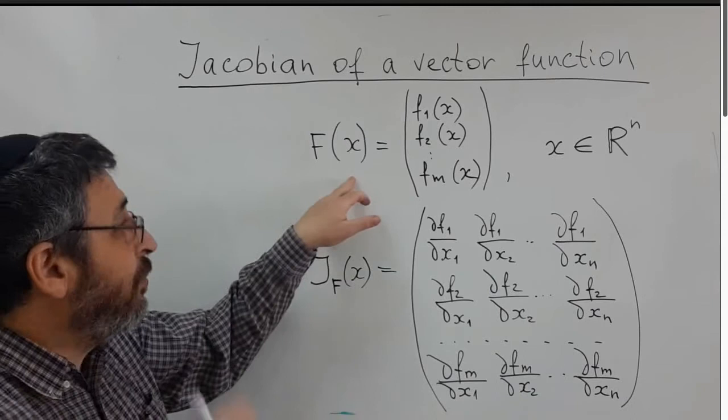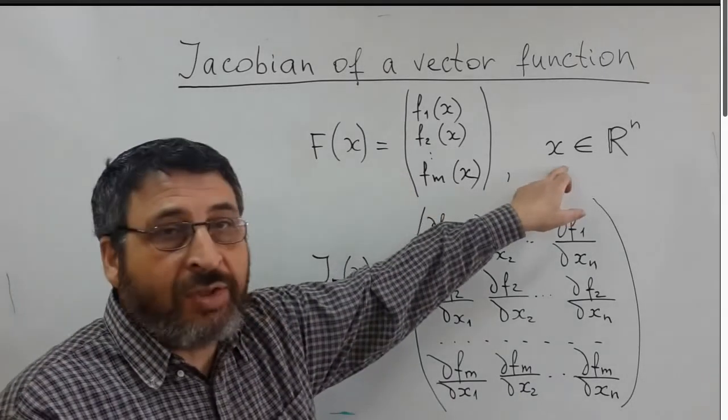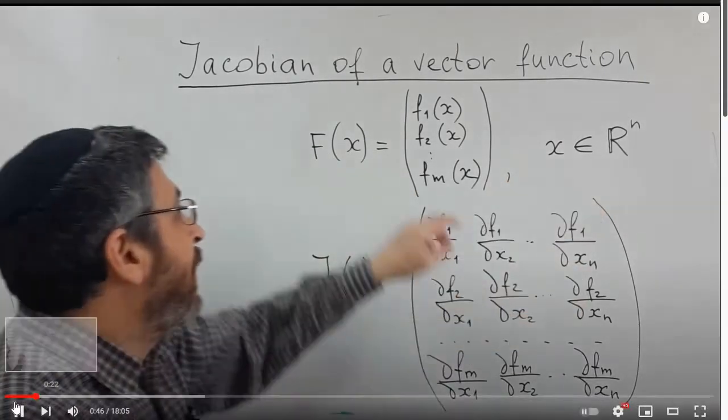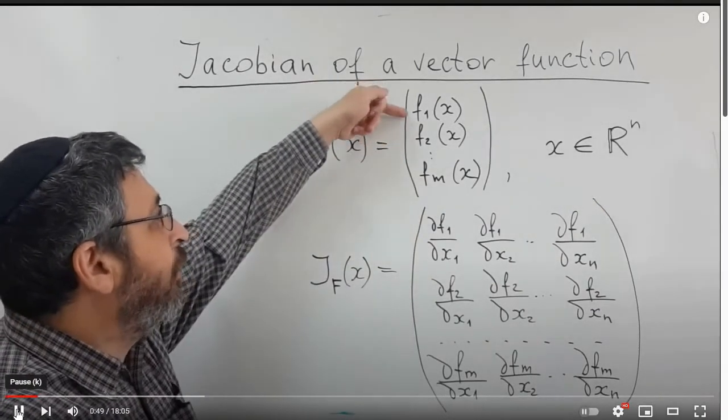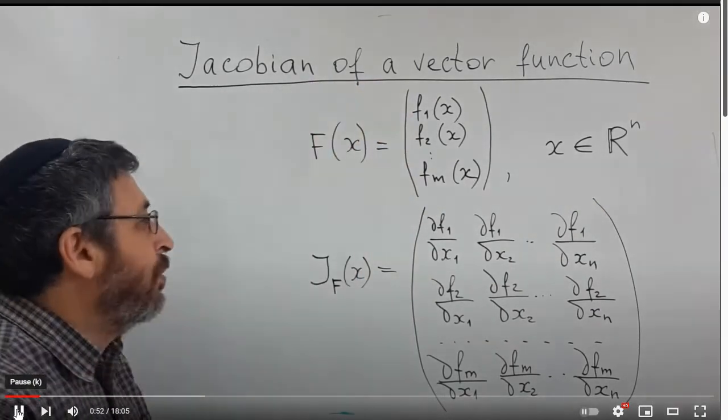Suppose we have a vector function of a vector variable. So we have a vector x in R^n, and we have a function with components f1 of x, f2 of x, and so on, fm of x.